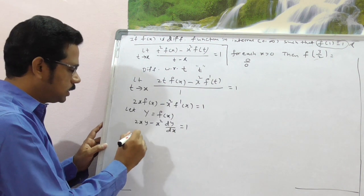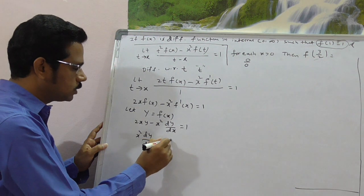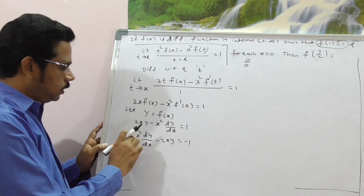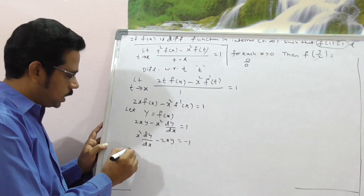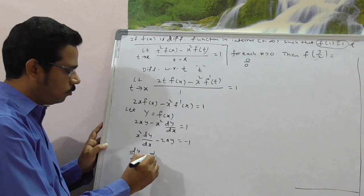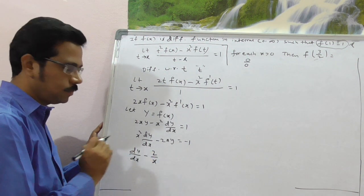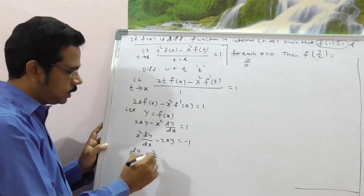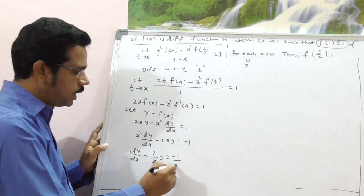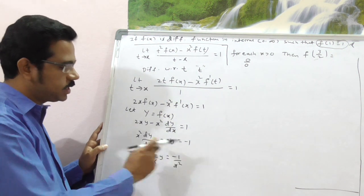Rearranging to standard form: x²·(dy/dx) − 2x·y = −1. Dividing both sides by x²: dy/dx − (2/x)·y = −1/x². This is a linear differential equation of the form dy/dx + P·y = Q, where P = −2/x and Q = −1/x².